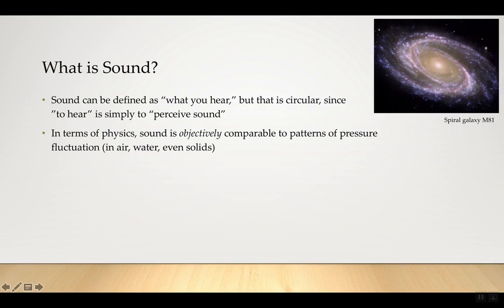As a somewhat strange example, this is a picture of a spiral galaxy. Our galaxy, the Milky Way, looks like this too. What look like spiral arms to us are actually waves of compacting and decompressing — stars moving together and going apart. This happens in the air, in water, in solids, and at the scale of a galaxy. It's the kind of thing that happens all over the physical universe.